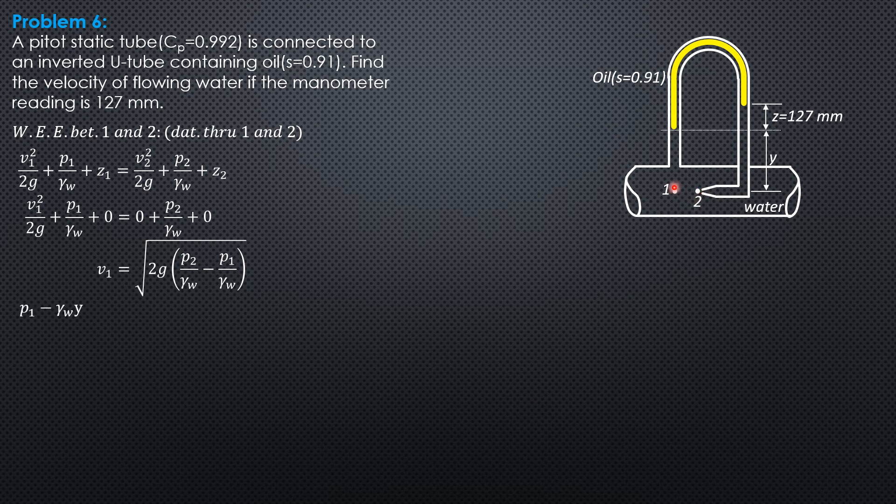So pressure at 1 minus γ of water (because this is water) times y minus γ of oil times z. Then we jump across to this point because these two points have the same pressure and same level.